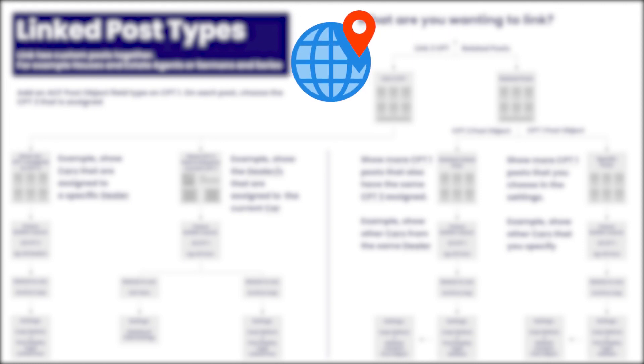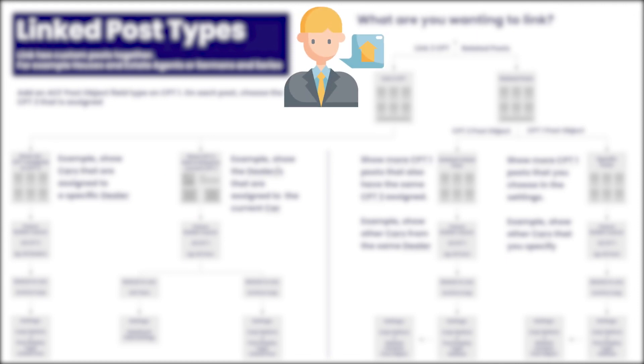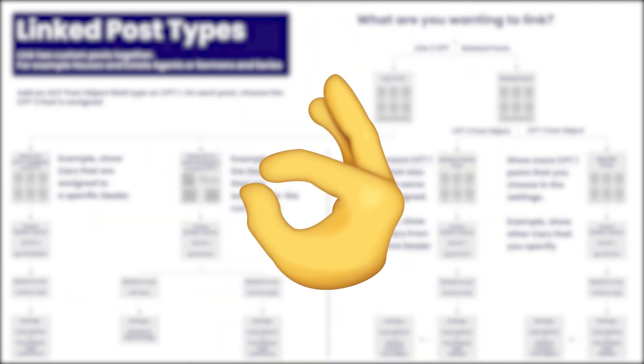There is obviously a very wide application for this. Thinking about businesses that might have multiple locations — you'll have location as the one custom post type, and the team as the many custom post type. Or maybe you're thinking about a real estate site where you'll have an agent representing properties. That's your one relationship, and the various properties they represent will be the many. You can probably start seeing how this is an extremely powerful feature.